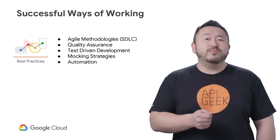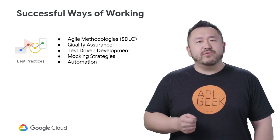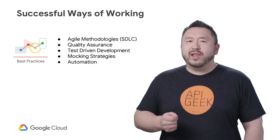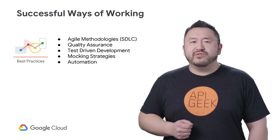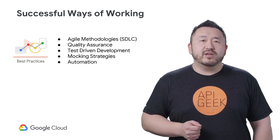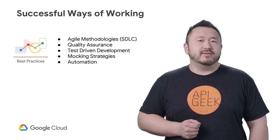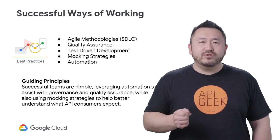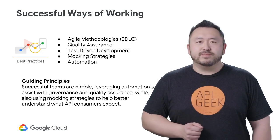This section covers best practices for organizations using agile development for APIs. Outline your software development lifecycle, how your teams will maintain quality assurance, and what strategies you'll focus on for mocking your data, and how all of these ways of working might be automated. Your guiding principle: successful teams are agile, nimble, and leverage automation.